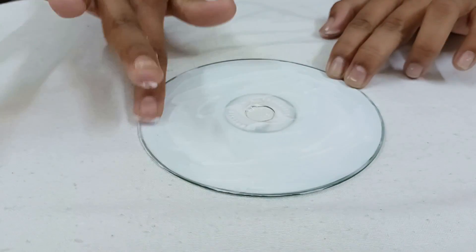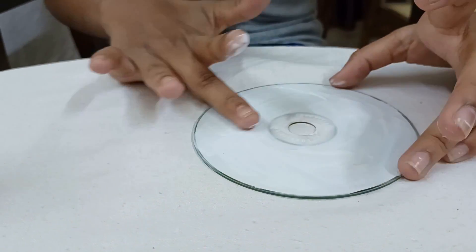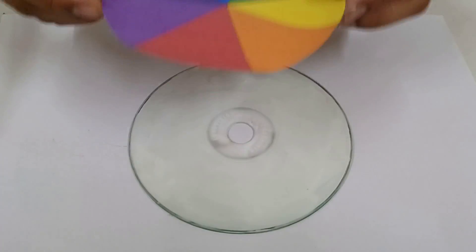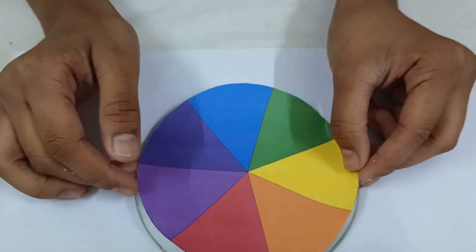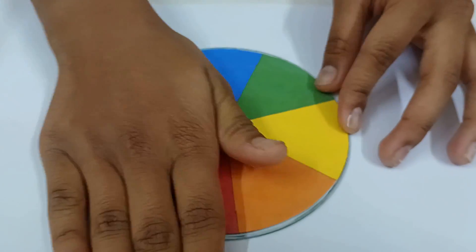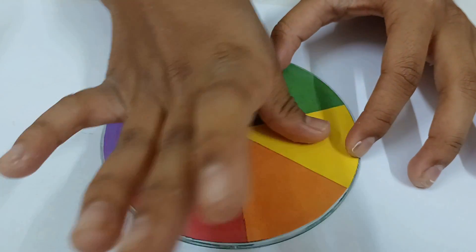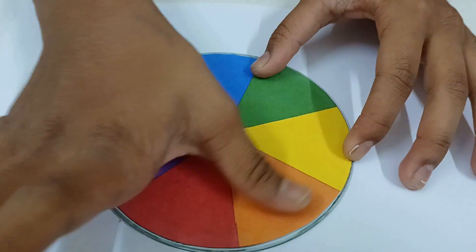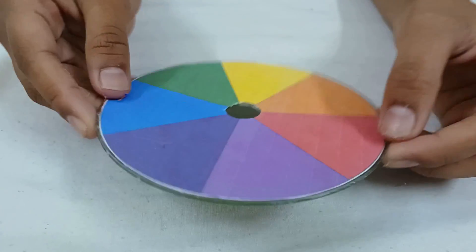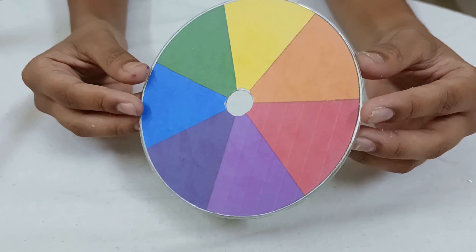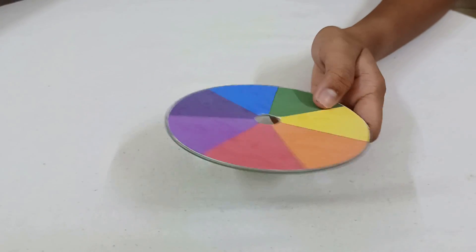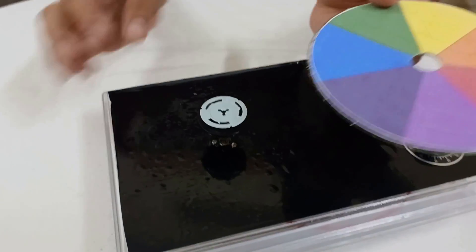Now place the Newton disc on the CD carefully, like this. Press it well. Now make a hole in center. I have already made it. Now let us place our Newton disc on the device.